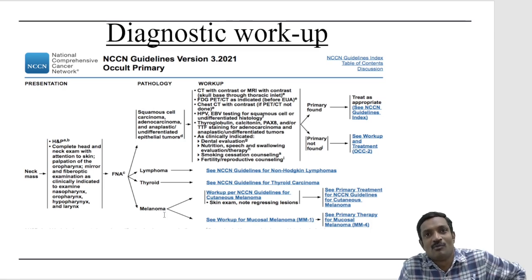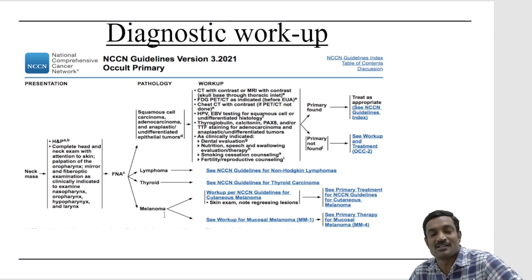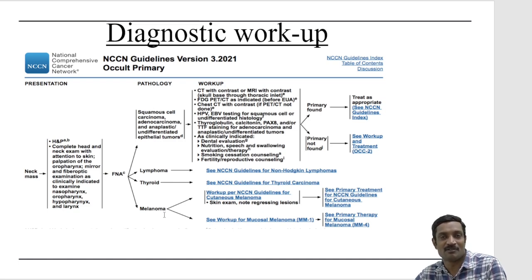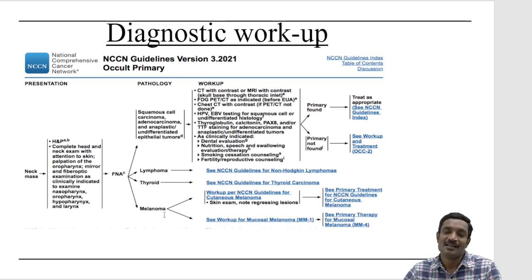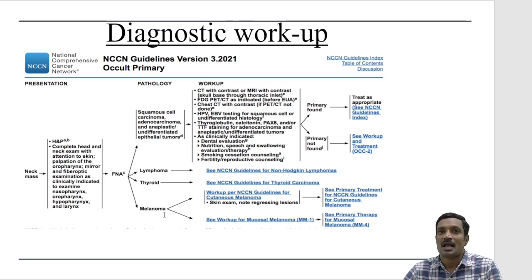For squamous cell carcinoma, adenocarcinoma, and anaplastic carcinoma, imaging is essential — mainly CT scan and MRI. FDG-PET scan is now a very important imaging modality for carcinoma of unknown primary. It can identify the primary in most cases and reveal other sites of metastasis simultaneously — for example, showing a small lesion in the tonsils and a lung metastasis at the same time. PET scan is the most important imaging modality now. Where PET is unavailable, CT scan or MRI is used, and a chest X-ray rules out lung metastasis.